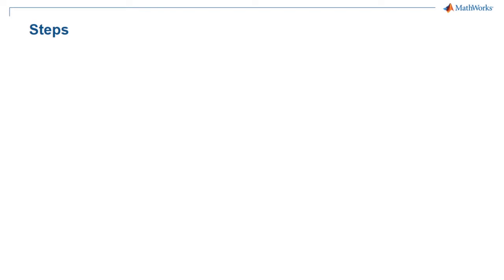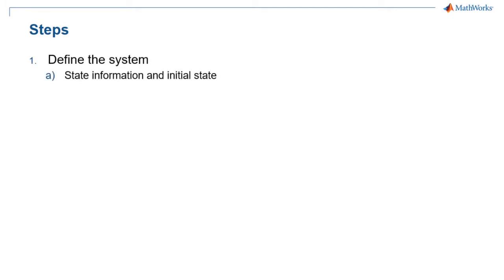Let's understand the typical steps you will go through when using StateFlow to model a reactive system. The first step is to define the system, which includes defining the state information as well as the default or initial state, defining the variables — both the input to and output from the StateFlow model — and defining the transitions, or how to go from one state to another.